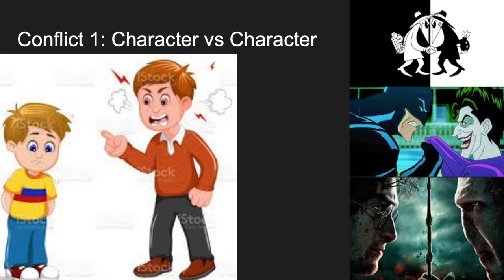The first conflict we're going to be discussing today is the character versus character conflict. As you see on the right, we have some famous examples, such as Batman and the Joker and Harry Potter and Voldemort. We're going to be discussing probably the most fleshed-out conflict throughout the story, that is between the man and his son. Throughout the story, the two have constant disputes over the actions that the man takes towards other people.